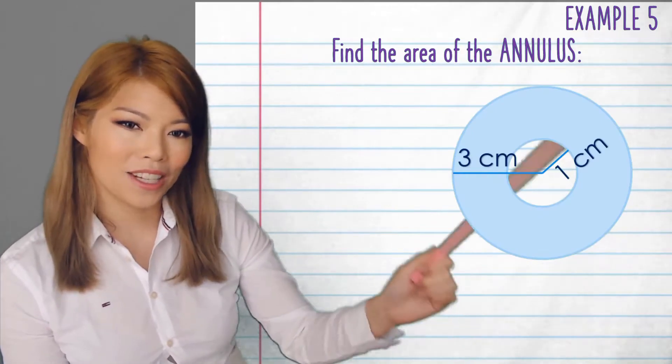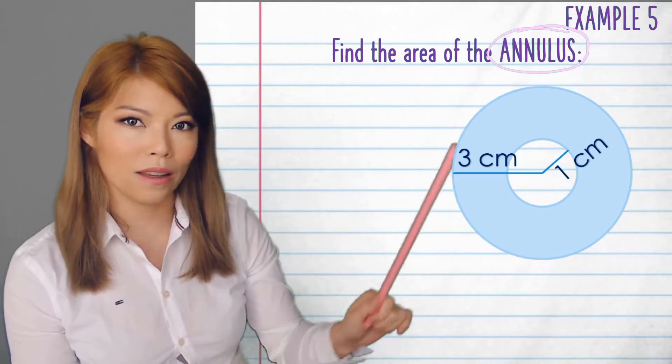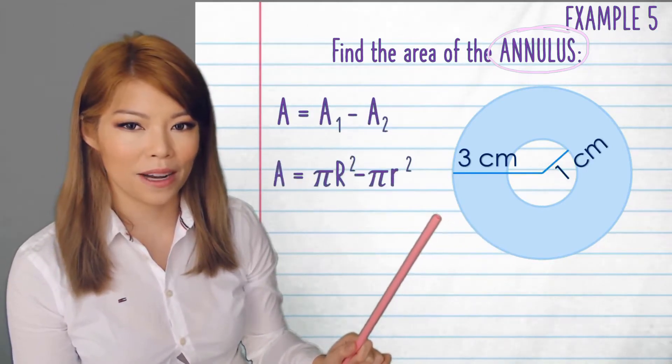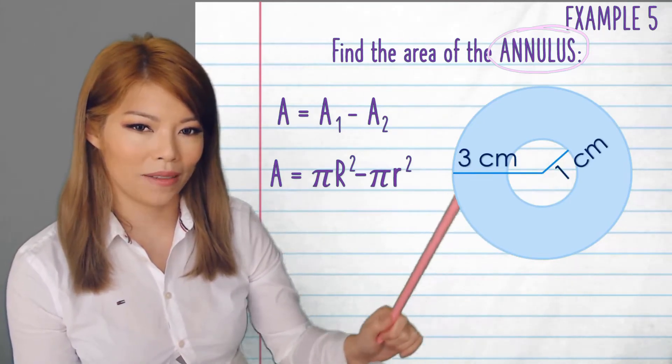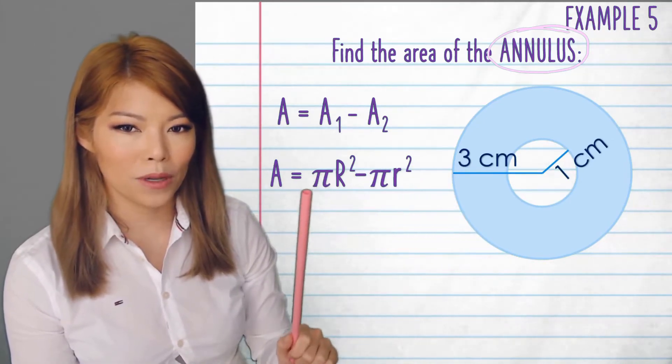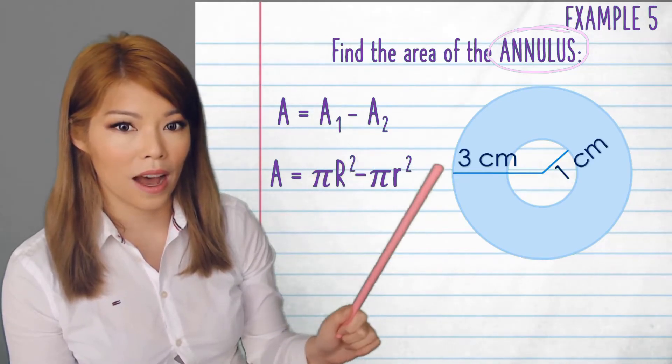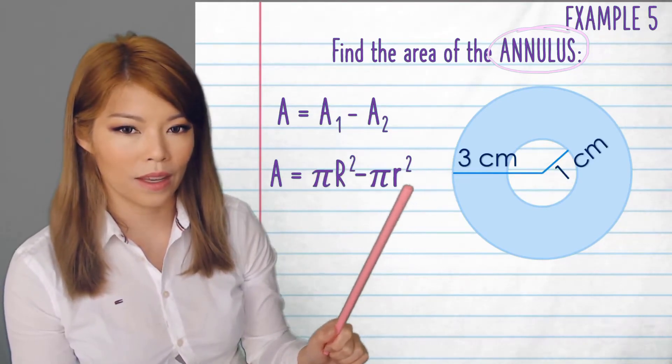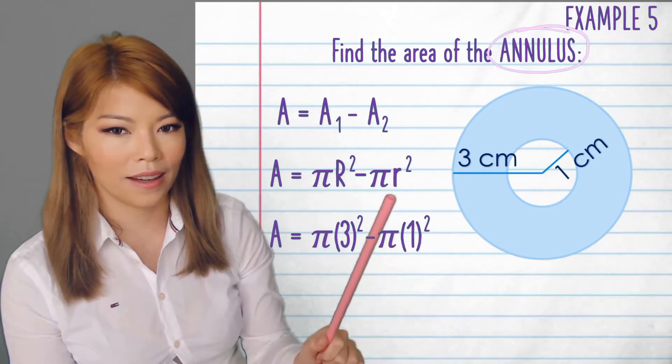Last example. This shape here is called an annulus. It's a big circle with a hole in the middle. So to find the area, we have to take the big area minus the little area inside. Now, I've distinguished between the two areas pi r squared by using capital R for the radius of the big circle. So that's 3 goes there, and then 1 goes in there, in the second one.